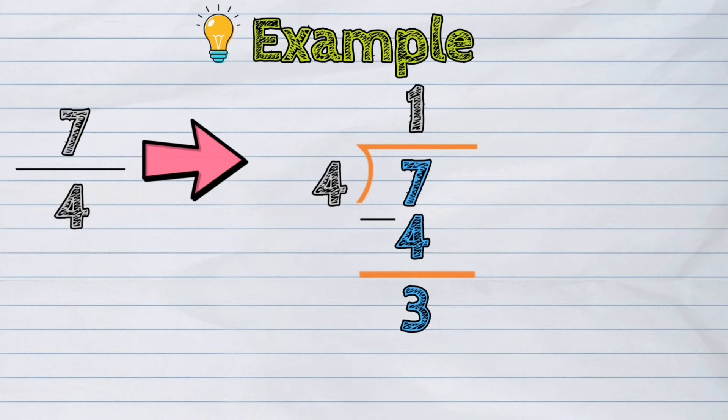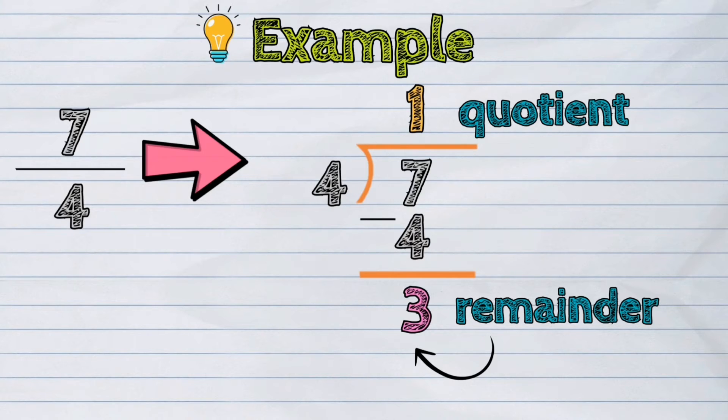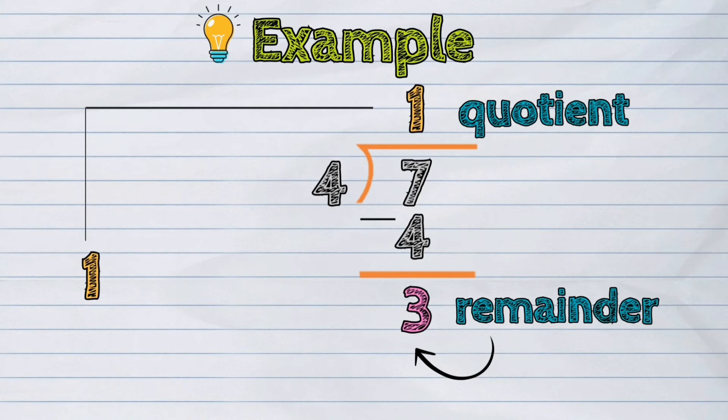In this case, the 3 here is already the remainder. So it means our quotient, which is 1, becomes the whole number.